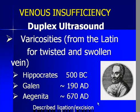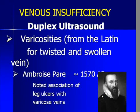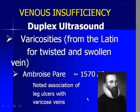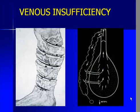Agenita, about 1,500 years ago, actually described the ligation and excision of these varicose veins — a direct surgical approach, somewhat more civilized than what Galen proposed with just a sharp hook. And it wasn't until about 500 years ago that Ambrose Paré actually noted the association of ulceration with these varicose veins and made that association of chronic venous changes associated with large varicosities.